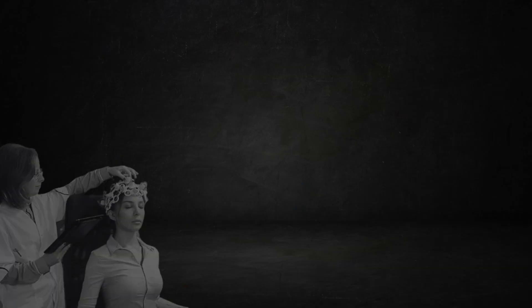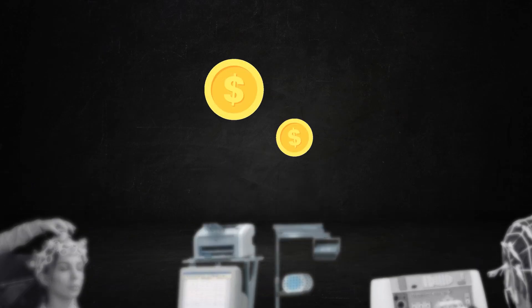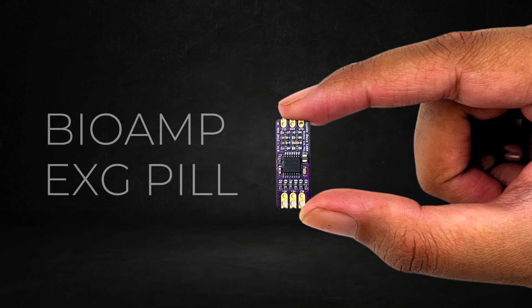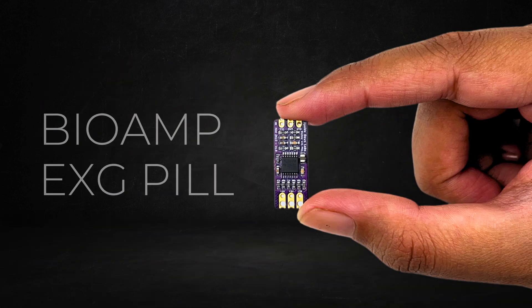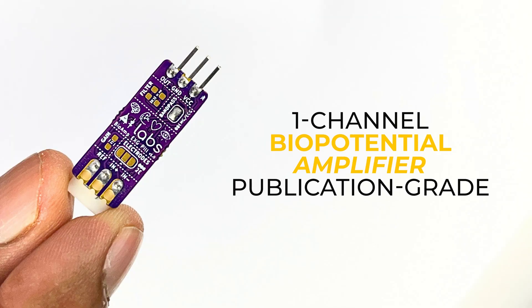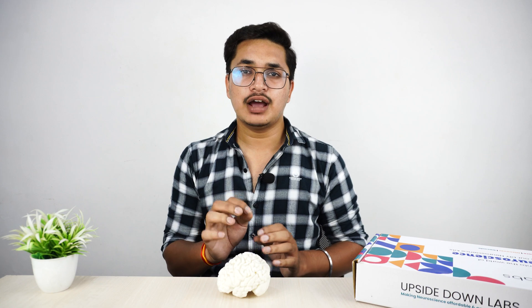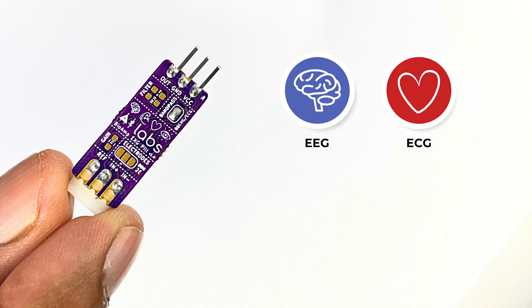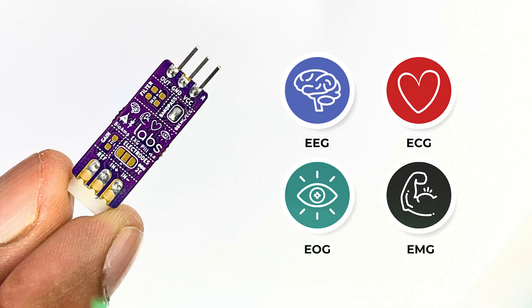Usually devices that can record EEG are very expensive, and that's why we have developed BioAmp EXG Pill — with a name to make neuroscience affordable and accessible to all. It is a single-channel publication-grade biopotential amplifier that can not only record EEG but other biopotential signals as well, be it ECG, EOG, or EMG — but more on that sometime later.